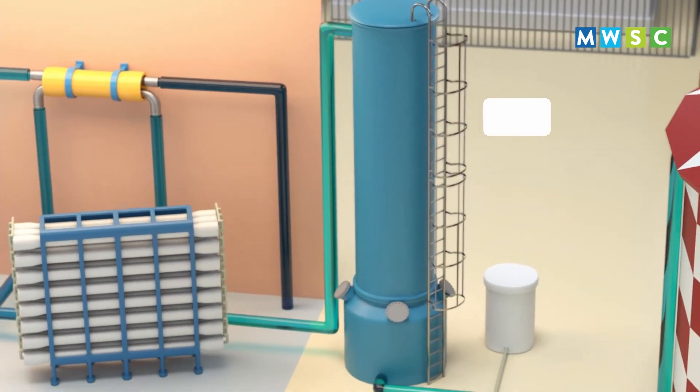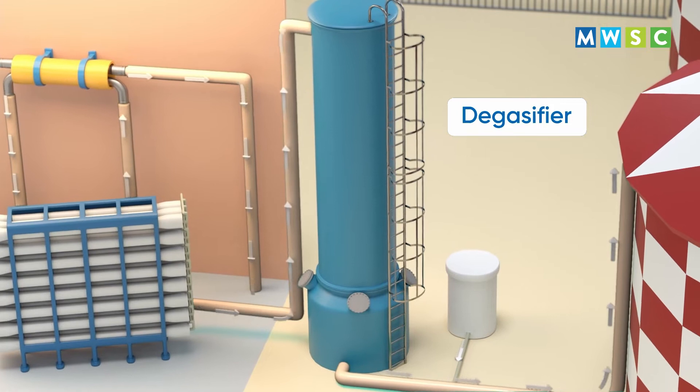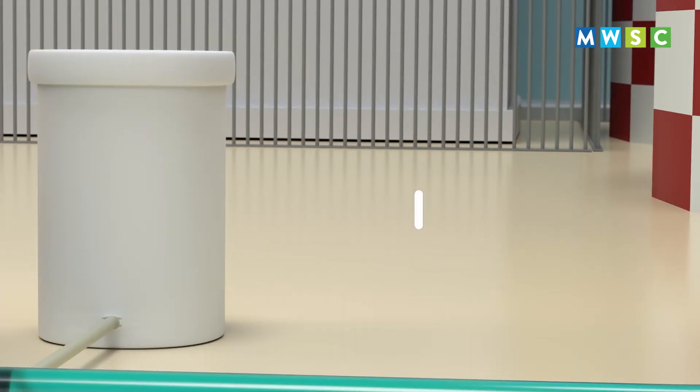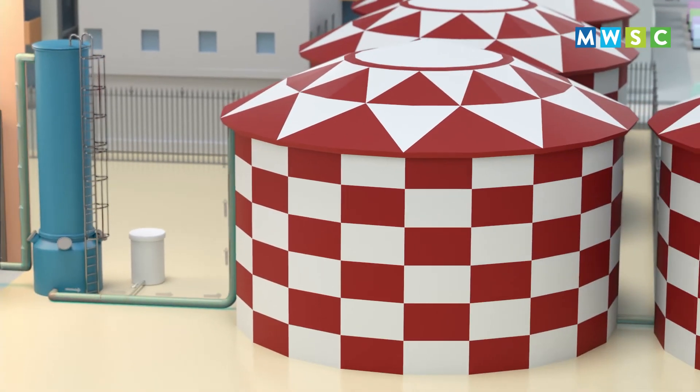As for the desalinated water, it travels through units called degasifiers to remove any odor. Water is then treated with chlorine before it is sent into storage tanks.